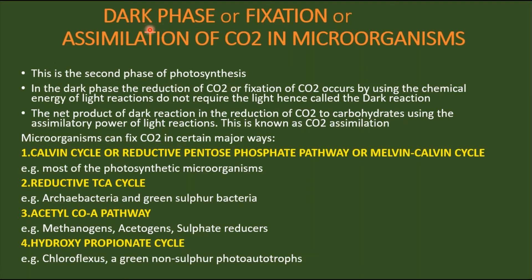In this part we are going to discuss the second phase of photosynthesis, that is the dark phase, or fixation of carbon dioxide, or assimilation of carbon dioxide in microorganisms. In the dark phase, the reduction or fixation of carbon dioxide occurs by using the chemical energy of the light reaction — that is, the ATP and NADPH. This dark phase does not require light, hence it is called dark reaction. Do not think it occurs only at nighttime; it occurs during the daytime as well, but does not require light.